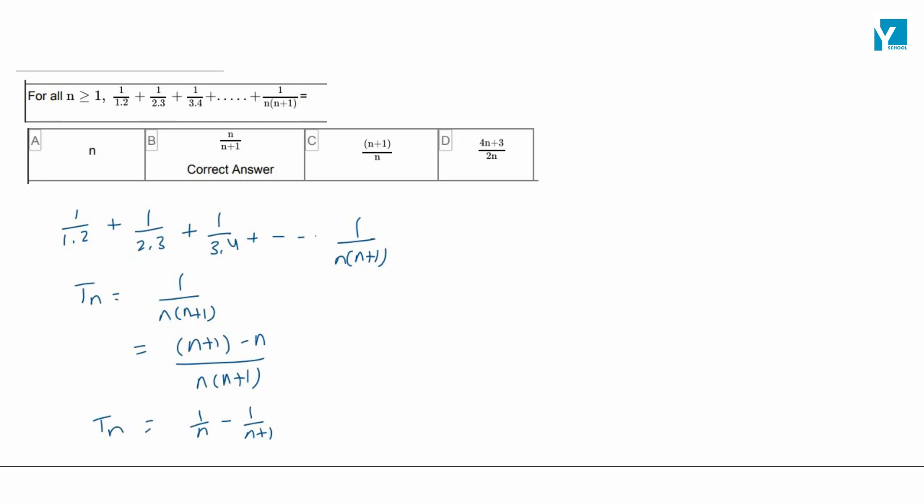So, tn is coming to you. Now you have to find the sum of this series, that means sigma tn, that will be equal to, for n greater than or equal to 1: 1 upon 1 minus 1 upon 2, plus 1 upon 2 minus 1 upon 3, plus 1 upon 3 minus 1 upon 4, and so on, 1 upon n minus 1 upon n plus 1.